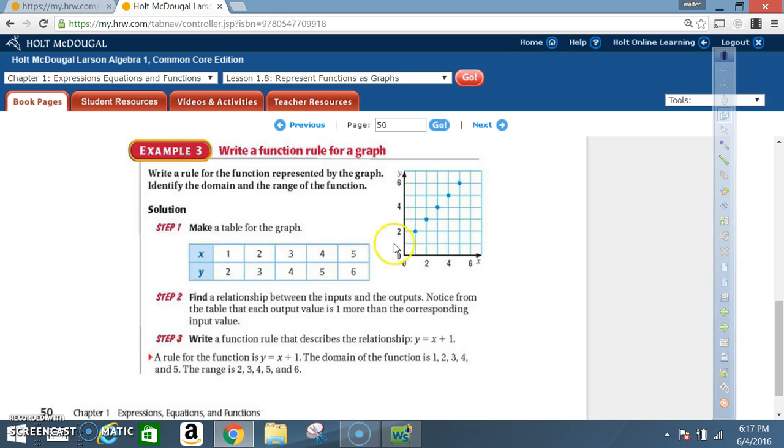So write down all the ordered pairs. So here, x is 1, y is 2. So x is 1, y is 2. Here, x is 2, y is 3. So we got 2, 3. And then next we got 3, 4. Next we have 4 and 5. And then next we have 5 and 6. Step 2. Find a relationship between the input and the outputs. Notice from the table that each output value is 1 more than the corresponding input value. Step 3. Write a function rule that describes the relationship. So here, we can easily see that y is equal to the x value plus 1.